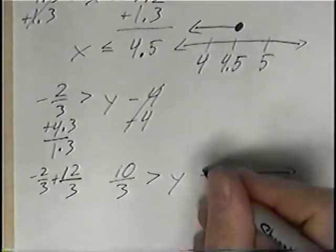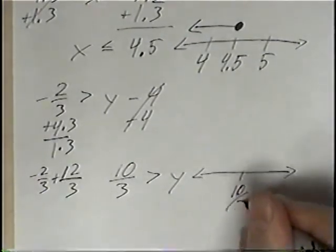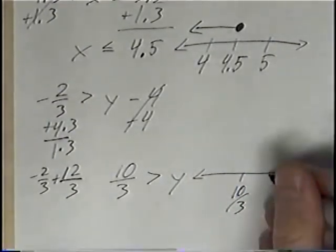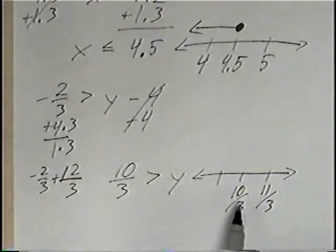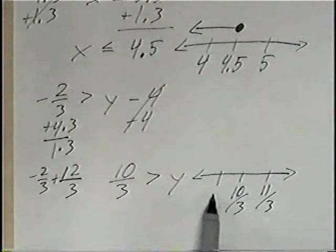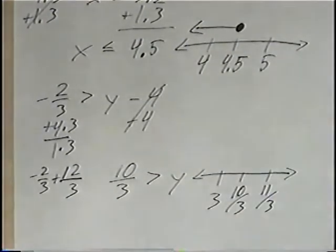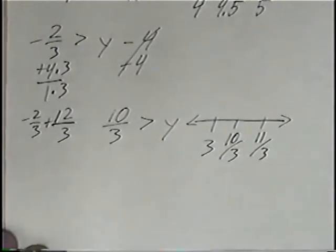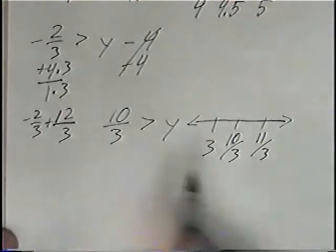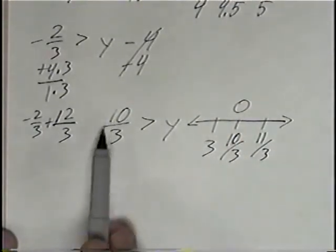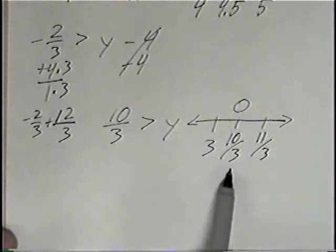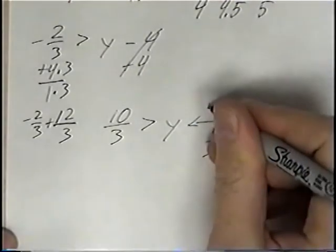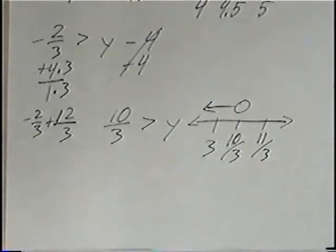Then we can graph the inequality. We put 10 over 3 in the middle of the number line, with one number to the right and one to the left. To the right of a fraction, we increase the numerator by 1, giving 11 over 3. To the left, we decrease the numerator, giving 9 over 3, which equals 3. Since it is not or equal to, we have an open circle. Since 10 over 3 is greater than y, that means y is smaller, so we want the smaller numbers from 10 over 3, and smaller numbers go to the left. That would be the graph for this inequality.